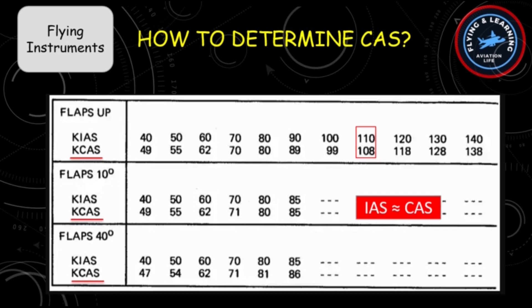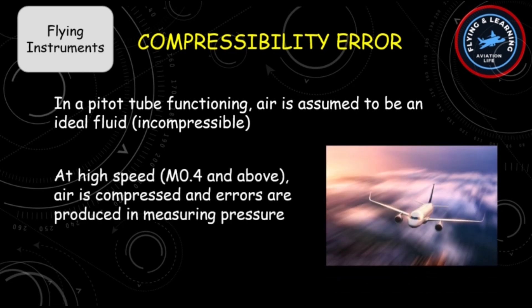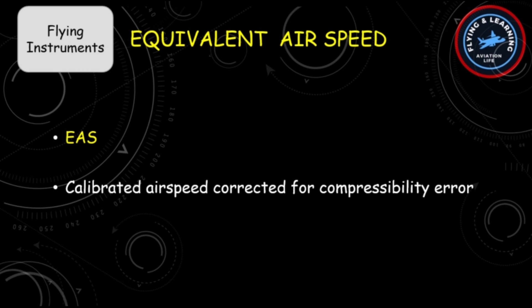Moving to the next type of error: compressibility error. In pitot tube functioning, air is assumed to be an ideal fluid that is incompressible. However, in reality, at high speeds — roughly Mach 0.4 and above — air is compressed and errors are produced in measuring pressure. If we apply the compressibility correction factor to calibrated airspeed, we get the next type: Equivalent Airspeed. By definition, equivalent airspeed is the calibrated airspeed corrected for compressibility error.